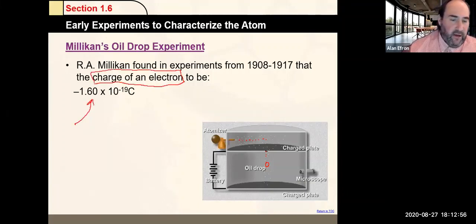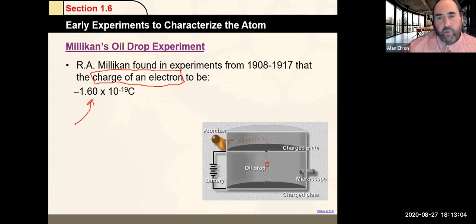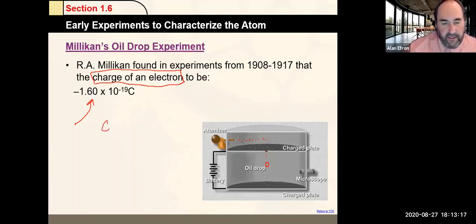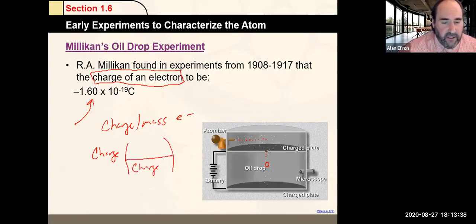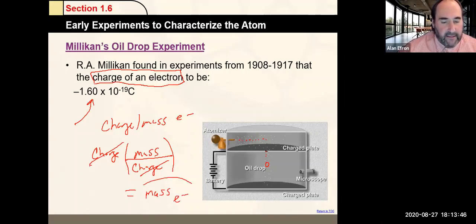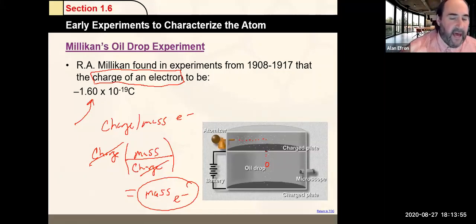Millikan found that the charge of an electron was −1.6 × 10^−19 coulombs. Combining both experiments: Thomson found the charge-to-mass ratio of an electron, and Millikan found the charge of an electron. If you take Millikan's charge and divide it by Thomson's charge-to-mass ratio, you can calculate the actual mass of an electron.